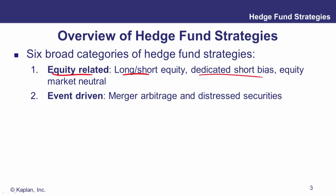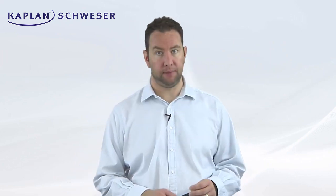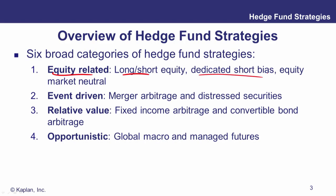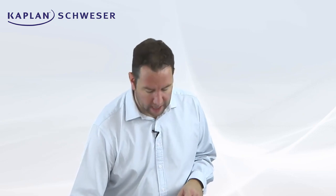An event-driven hedge fund strategy is one that looks at corporate events — things like mergers and acquisitions, divestments, maybe even bankruptcies or close to bankruptcies in the form of distressed securities. So we'll look at those two sub-strategies shortly: merger arbitrage and distressed securities. Relative value looks for perceived mispricings in certain securities. The main two we're going to look at are fixed income arbitrage and convertible bond arbitrage. Fourthly, opportunistic — a bit of a catch-all term, really where the manager is using their discretion, using their gut instinct sometimes, to try and identify excess returns. So global macro and managed futures are the two we'll look at there.